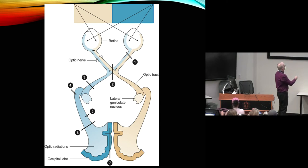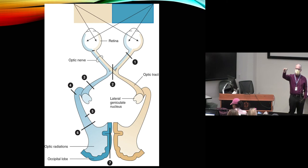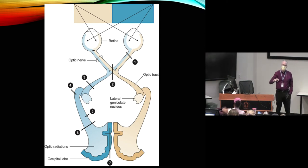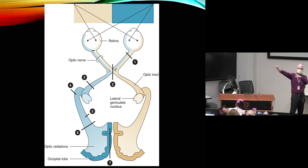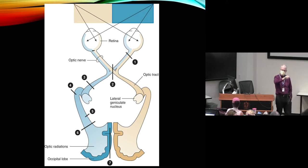We can follow that vision from the optic tract to the lateral geniculate body, and then through the optic radiations going back to the occipital lobe. It's all crossed once we get behind the optic chiasm. So any lesion posterior to the optic chiasm - and there are a variety of different visual problems that can occur - they're all going to happen in the opposite visual field.